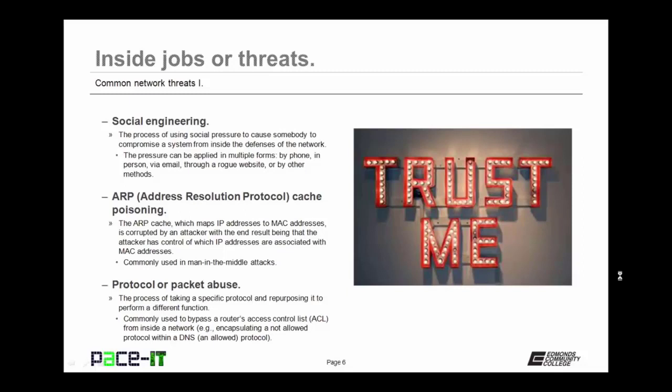ARP cache poisoning is another threat. In ARP cache poisoning, the ARP cache — which maps IP addresses to MAC addresses — is corrupted by an attacker, with the end result being that the attacker has control of which IP addresses are associated with MAC addresses. It's commonly used in man-in-the-middle attacks, which I will cover in just a bit.